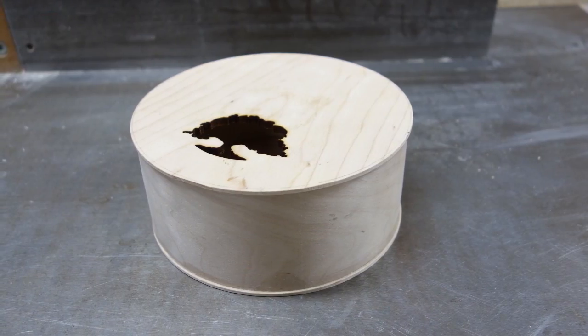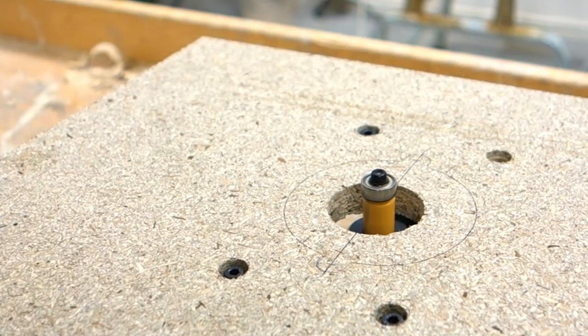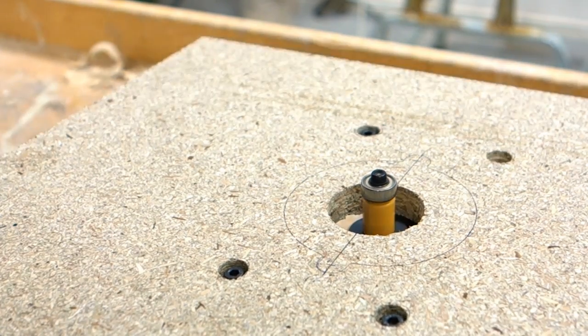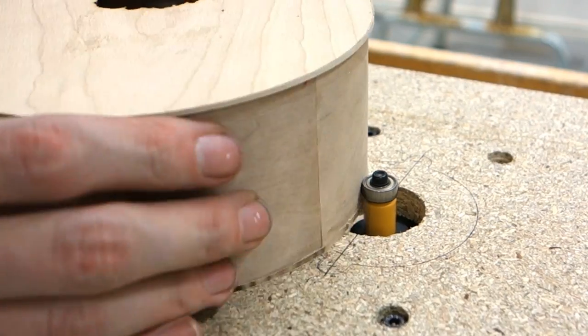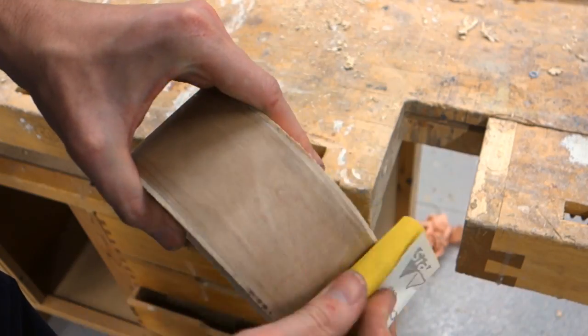Again, once the glue is dried, all you need to do to finish the body is to fit your router with a flush trim bit and flush up the top and the bottom with the side of the chamber. A light sanding and it's all done.